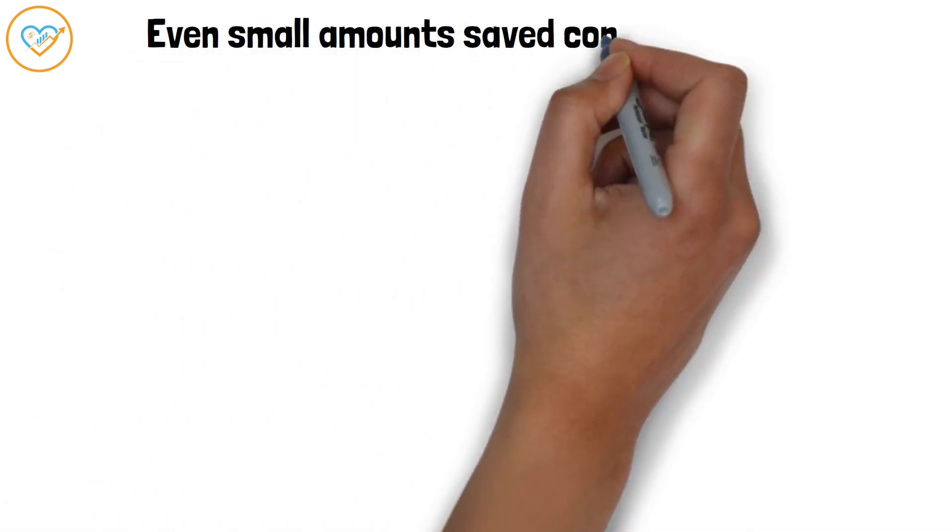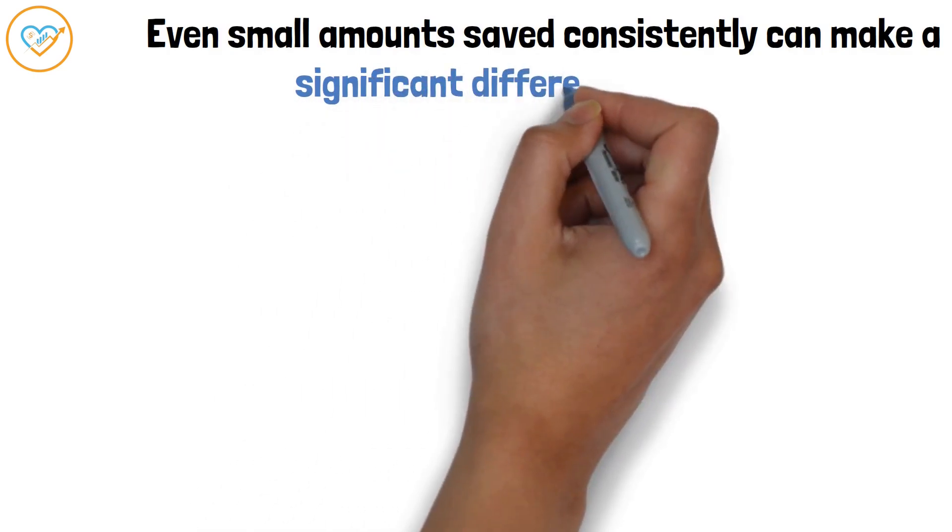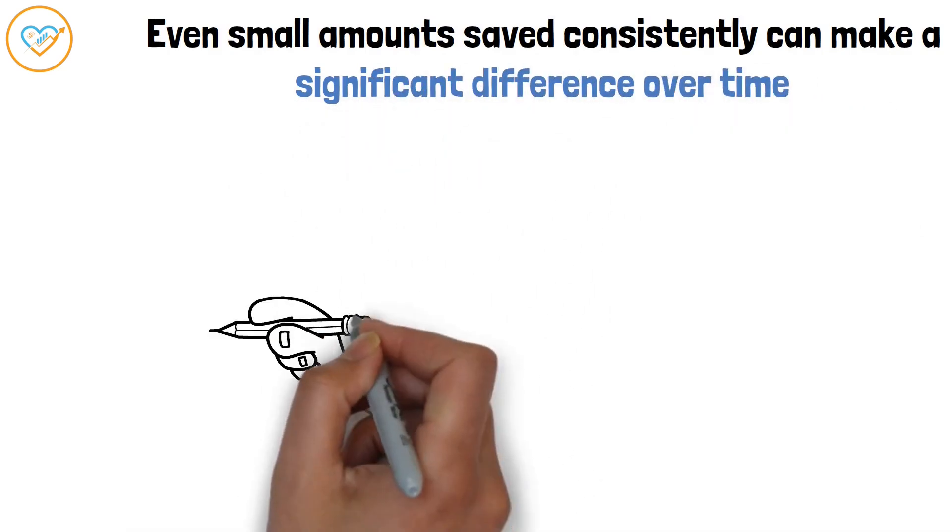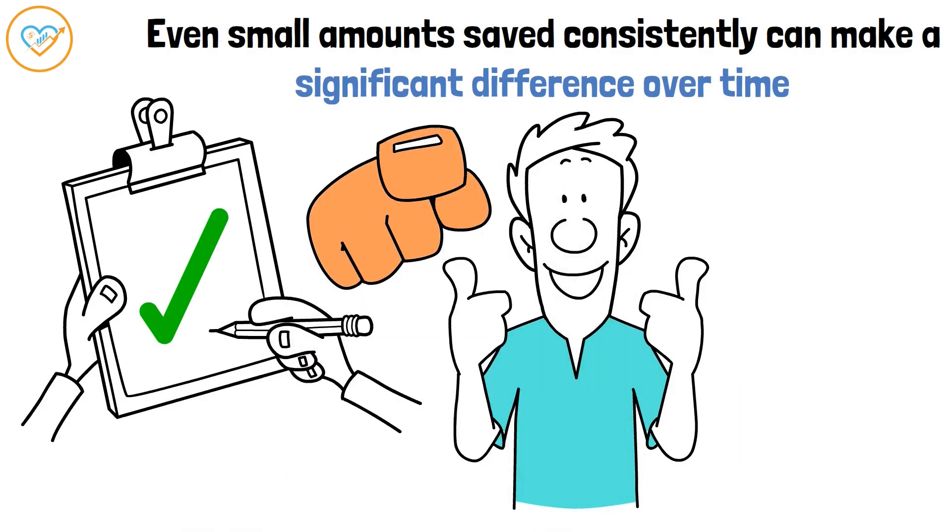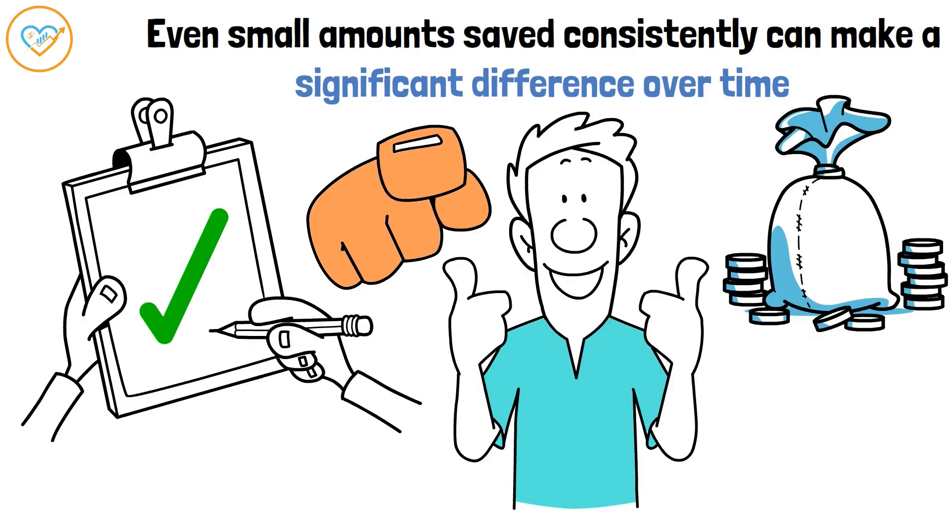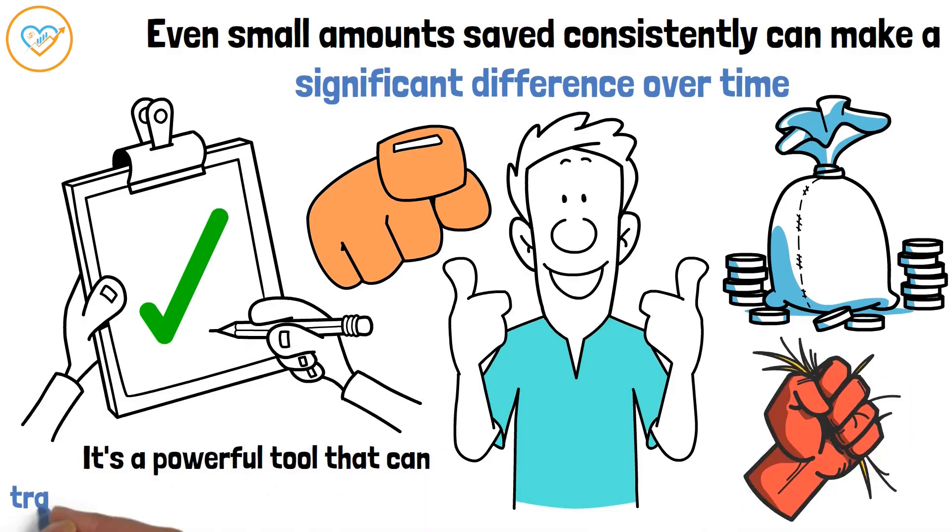Even small amounts saved consistently can make a significant difference over time. So, there you have it. The secret to breaking free from financial struggles is often simpler than you think. By prioritizing savings, you're taking control of your financial destiny. It's a powerful tool that can transform your relationship with money.